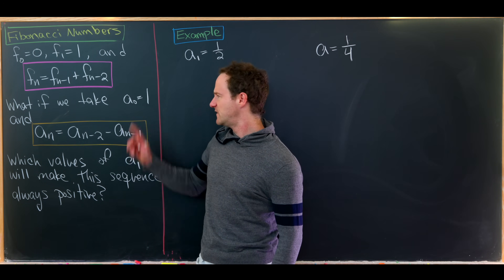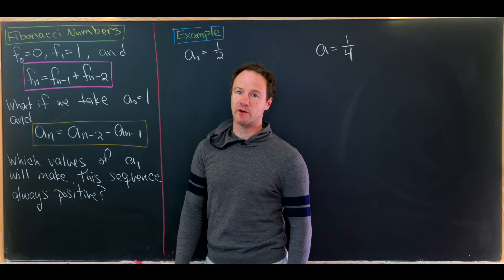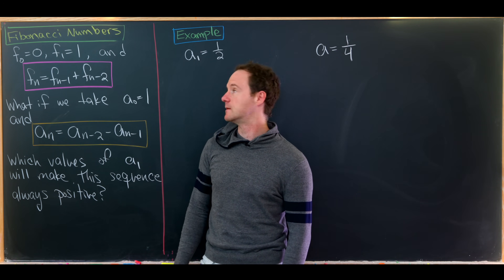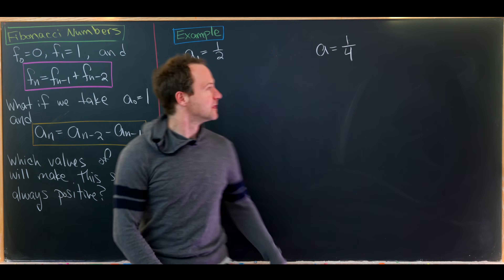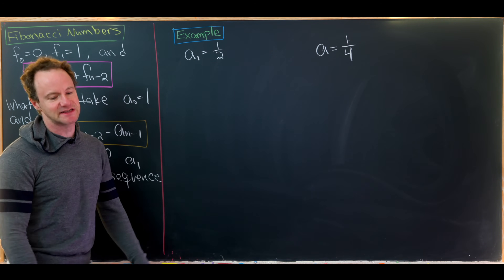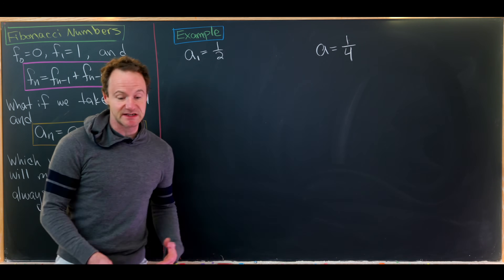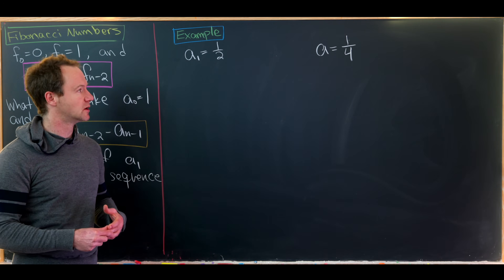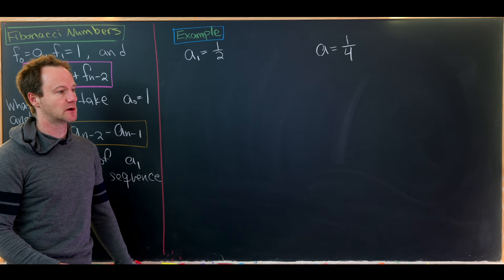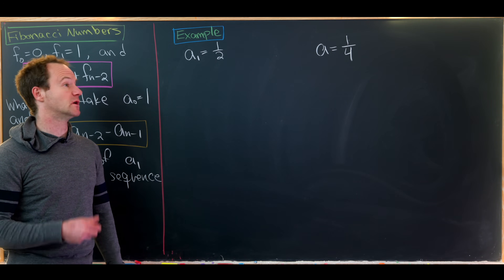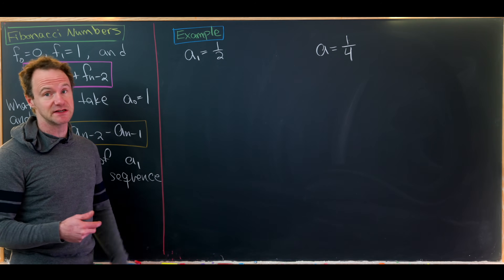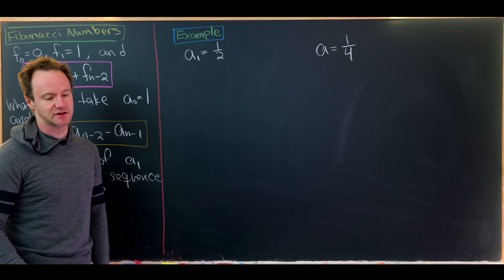Our goal is to determine which values of a_1 will make this sequence always positive. We've fixed a_0 at one, so this is really a question about a_1. Let's do a couple of examples first to see if any choices seem to work, and then we'll go through what we need to do to really answer this problem.